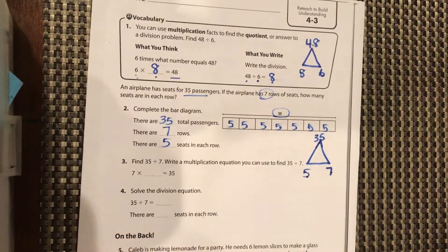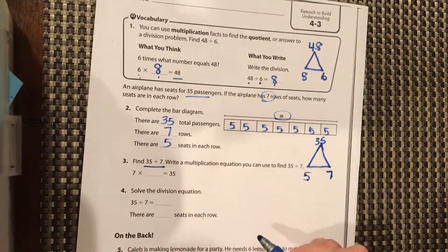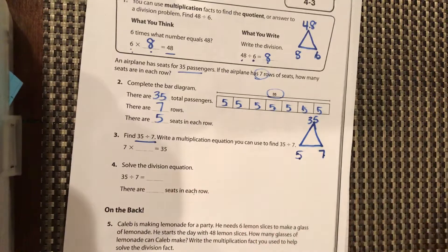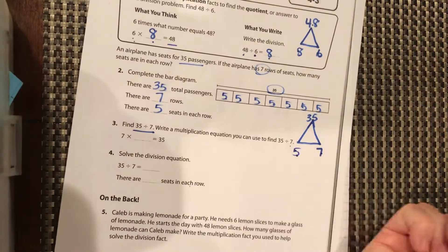There are 5 seats in each row. So if they ask us, find 35 divided by 7, and they want us to write one of the multiplication equations that we can use for 35 divided by 7.